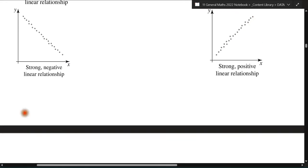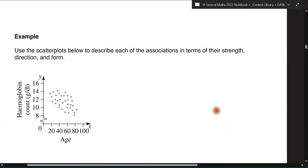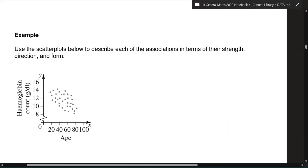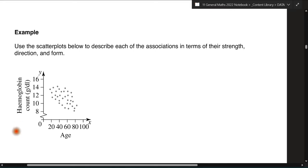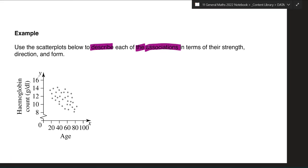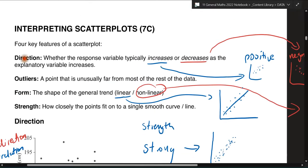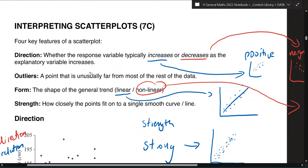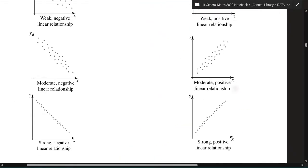Now we're going to get into how to answer these. These are the answers I want you to write whenever we ask you to describe the relationship or the association. There's a keyword there — you will see this a lot. When it says 'describe the association,' you're talking about the strength, the form, the direction, and if there are any outliers. Those four things that we talked about earlier — you're going to mention all of them.